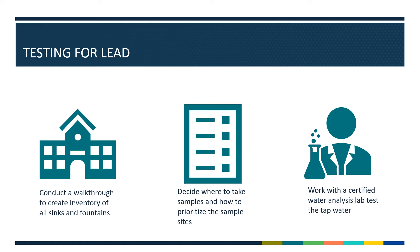This assessment allows schools to understand how water enters and flows through the building or buildings, identify and prioritize locations and sites for sampling, and identify additional sites staff or students may be using for drinking water, such as bathroom faucets, locker room shower heads, and non-traditional drinking water outlets that might be used to fill water containers. Remember that results from one outlet should not be used to represent water quality of the entire facility, since lead can be present anywhere in the building's plumbing.